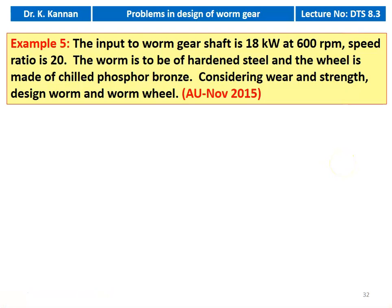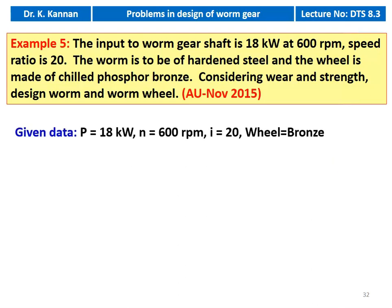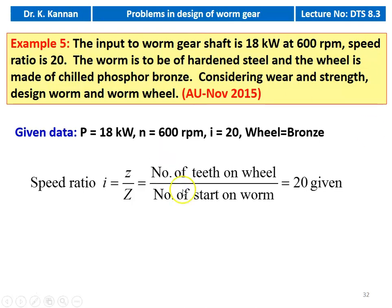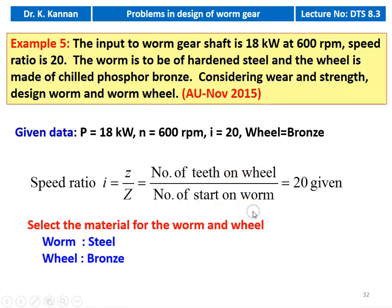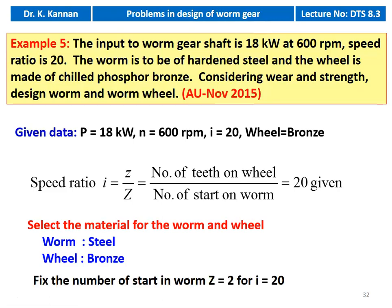We take Example number 5 from the November 2015 question paper. The input to the worm gear shaft is 18 kW at 600 RPM. The speed ratio is 20. The worm is to be of hardened steel and the wheel is made of chilled phosphor bronze. The speed ratio for the worm gear drive equals number of teeth on the wheel divided by number of starts of the worm, which is 20. The worm material is steel and the wheel material is bronze.